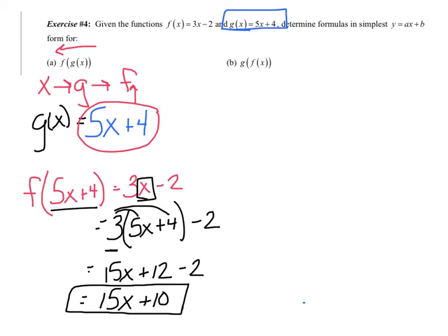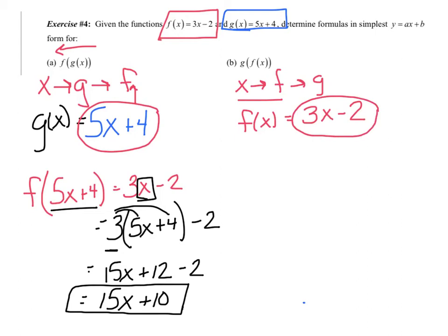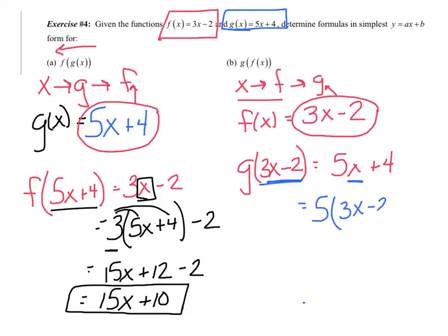Let's try G of F of X. Working backwards: X goes into F first. F of X is 3X minus 2. Now plug that into G: G of (3X minus 2) means taking 5X plus 4 and replacing X with (3X minus 2). That gives 5(3X minus 2) plus 4. Distributing: 15X minus 10 plus 4, which gives 15X minus 6.